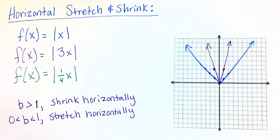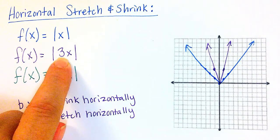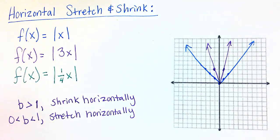So again, this is horizontal. Notice that our number that's being multiplied here is inside our function. And if we're thinking about this in the horizontal direction, this is actually shrinking.